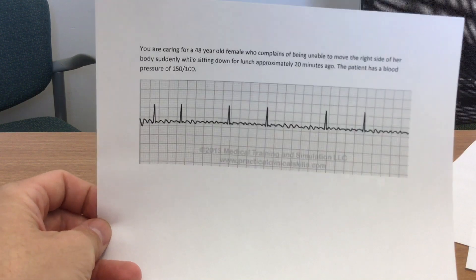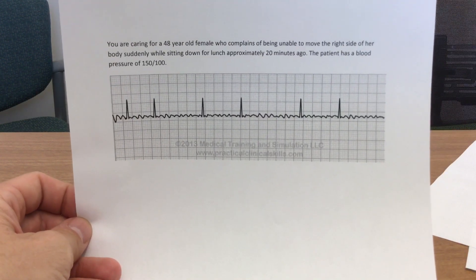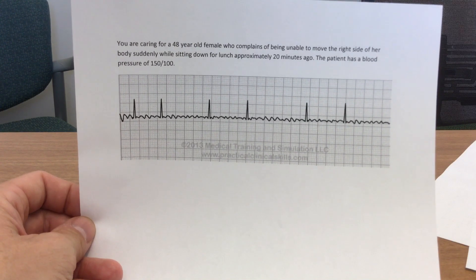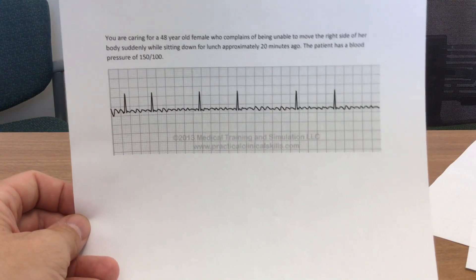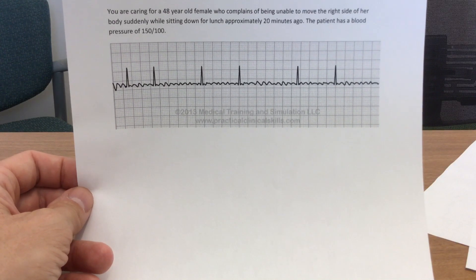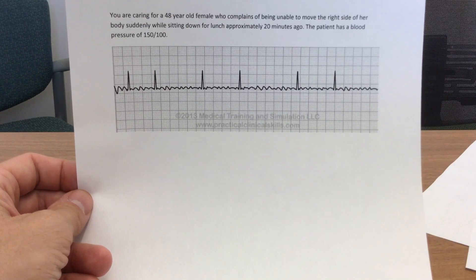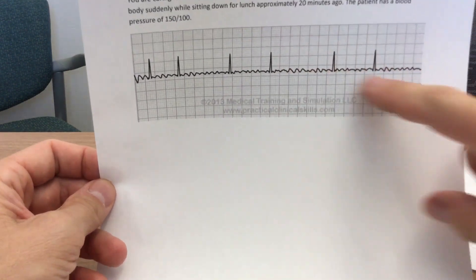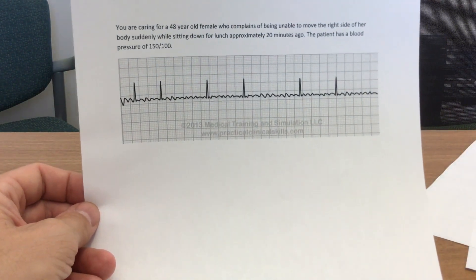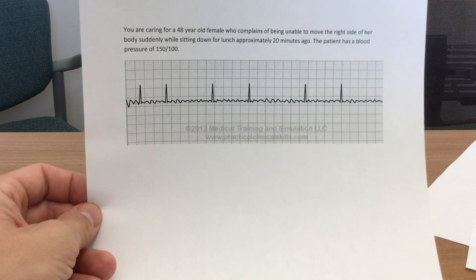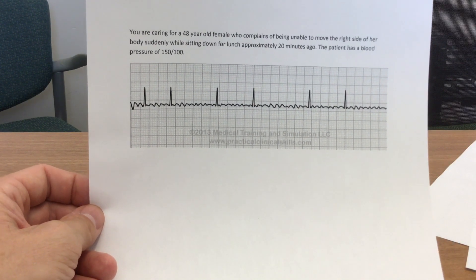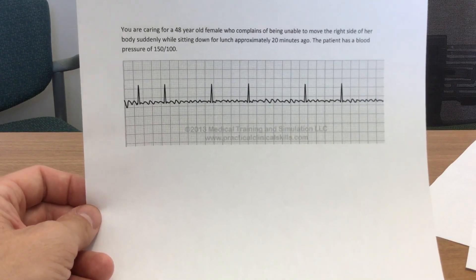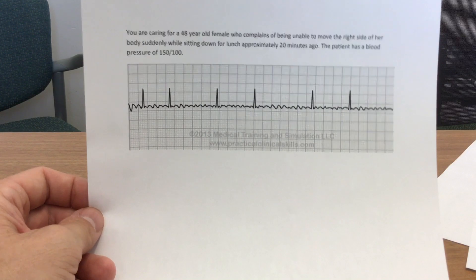Moving on to the next strip: you're caring for a 48-year-old female who complains of being unable to move the right side of her body while sitting down for lunch approximately 20 minutes ago. The patient has a blood pressure of 150 over 100. First thing — we've got an irregularly irregular rhythm with a wavy baseline, so this is atrial fibrillation. IV, O2, monitor, reassess, H's and T's, transport.